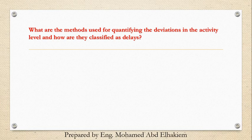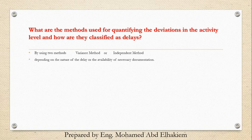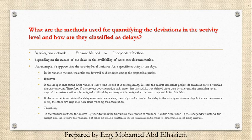What are the methods used for quantifying the deviations in the activity level and how are they classified as delays? By using two methods: the variance method or the independent method, depending on the nature of the delay or the availability of necessary documentation. For example, suppose the activity level variance for a specific activity is 10 days. In the variance method, the entire 10 days will be distributed among the responsible parties. However, in the independent method, the variance is not even looked at in the beginning; instead, the analyst researches project documentation to determine the delay amount. Therefore, if the project documentation only states that the activity was delayed three days by an event, the remaining seven days of the variance will not be assigned to this delay and may not be assigned to the party responsible for this delay.